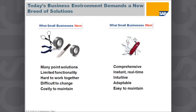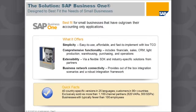We look at what the market trends are, and what that's telling us is that people want solutions that are comprehensive, give them instant real-time access to information, are intuitive, adaptable, and easy to maintain. From an SAP perspective, our answer to that is SAP Business One — our best fit solution for small businesses that have outgrown their accounting-only applications or those point solutions.